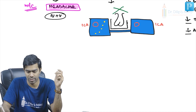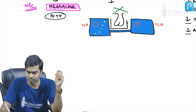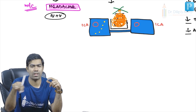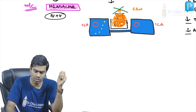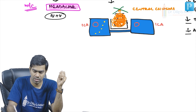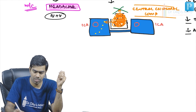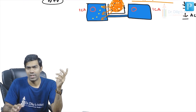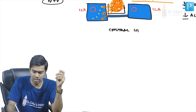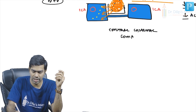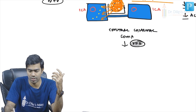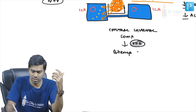When the pituitary enlarges, it first compresses the central crossing fibers of the optic chiasma — called central chiasmal compression. It can also compress the cavernous sinus and its associated nerves. Central chiasmal compression produces the characteristic visual field defect of bitemporal hemianopia.